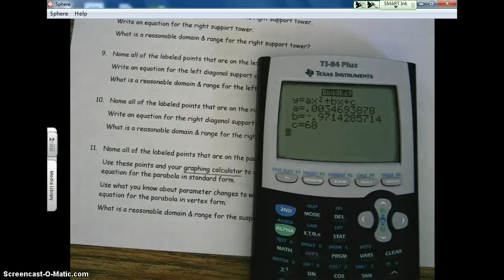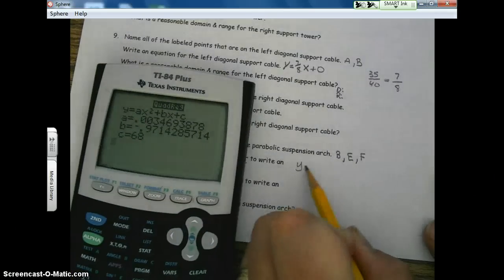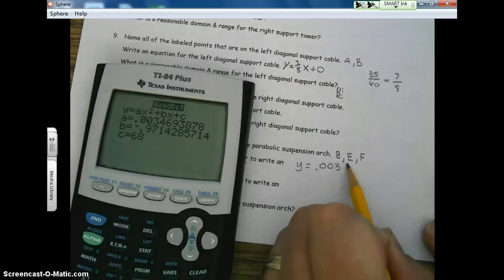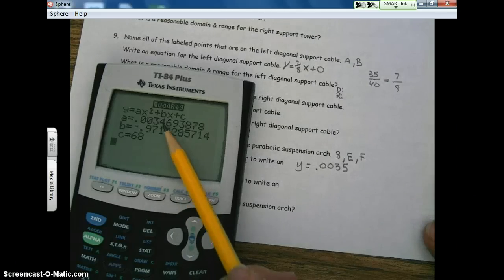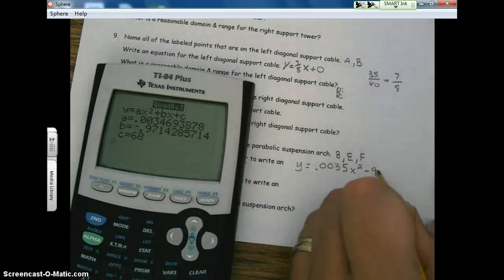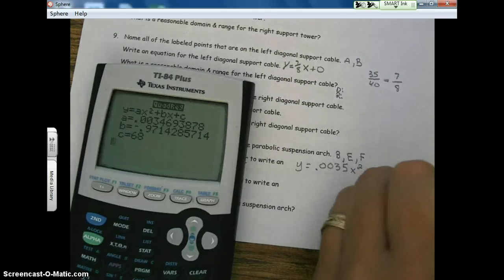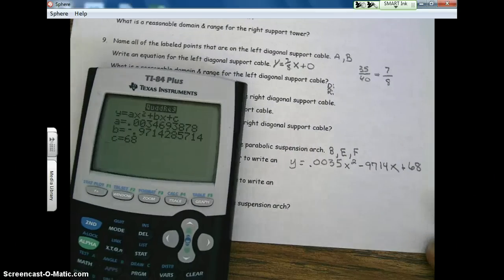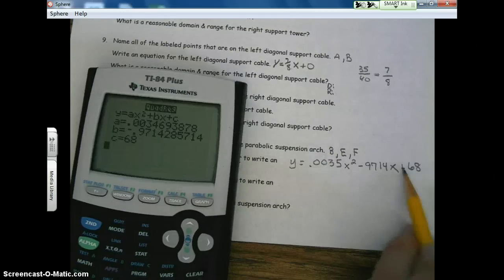All right. So notice our A value is very, very small. So that tells us we have a vertical compression. Remember? All right. Let's write this equation. Let's see. Move it over here. So we're going to have Y equals .003. And let's just go there. We'll round that four up to a five right here. Okay. X squared. Okay. Minus .9714X plus 68. Okay. If you'll recall, our A value is our vertical stretcher compression. In this case, it's a compression. It's less than one. And remember, this value over here is our Y intercept.